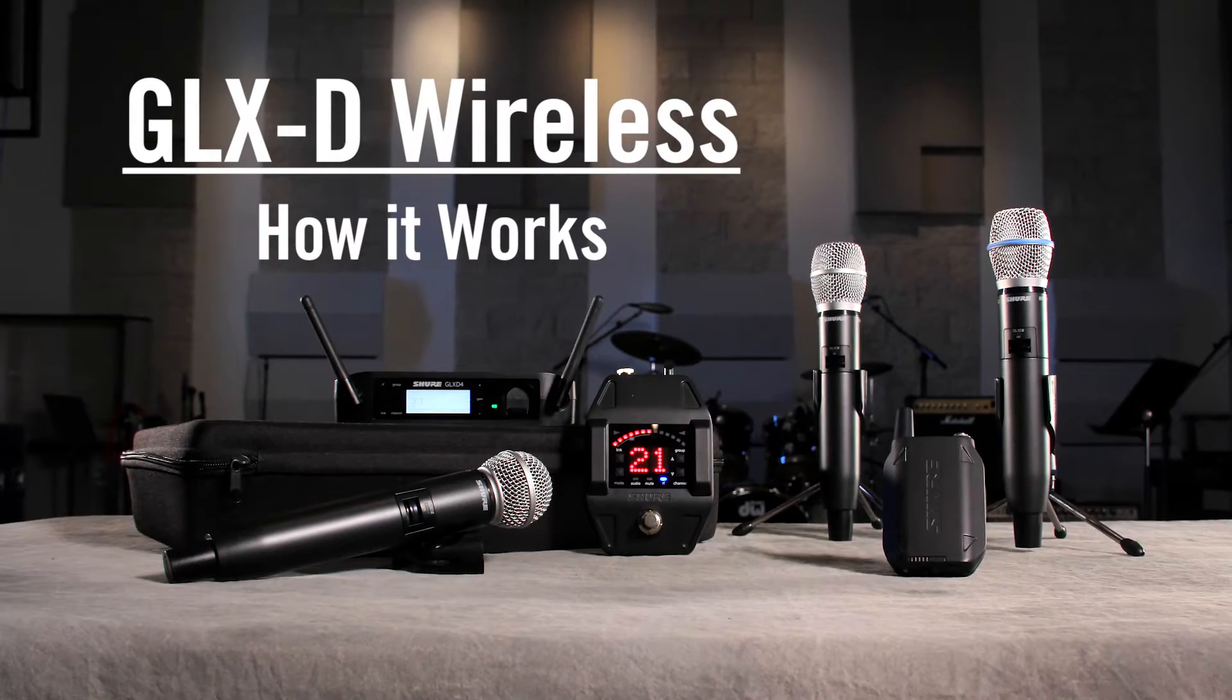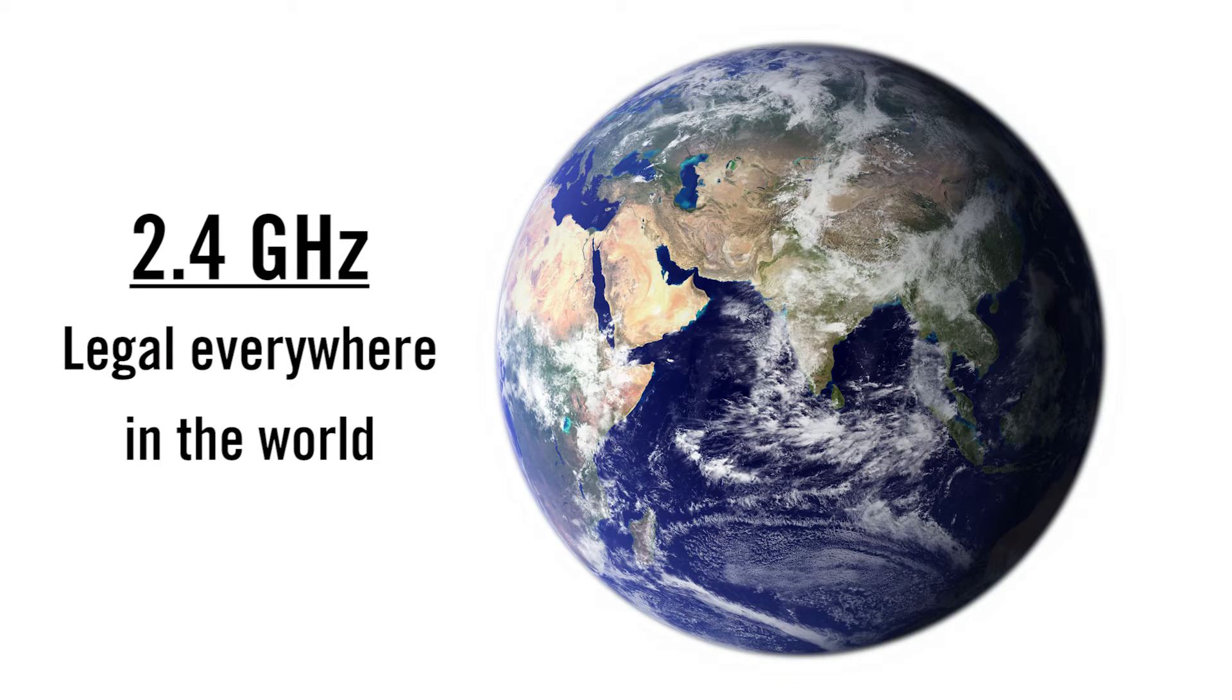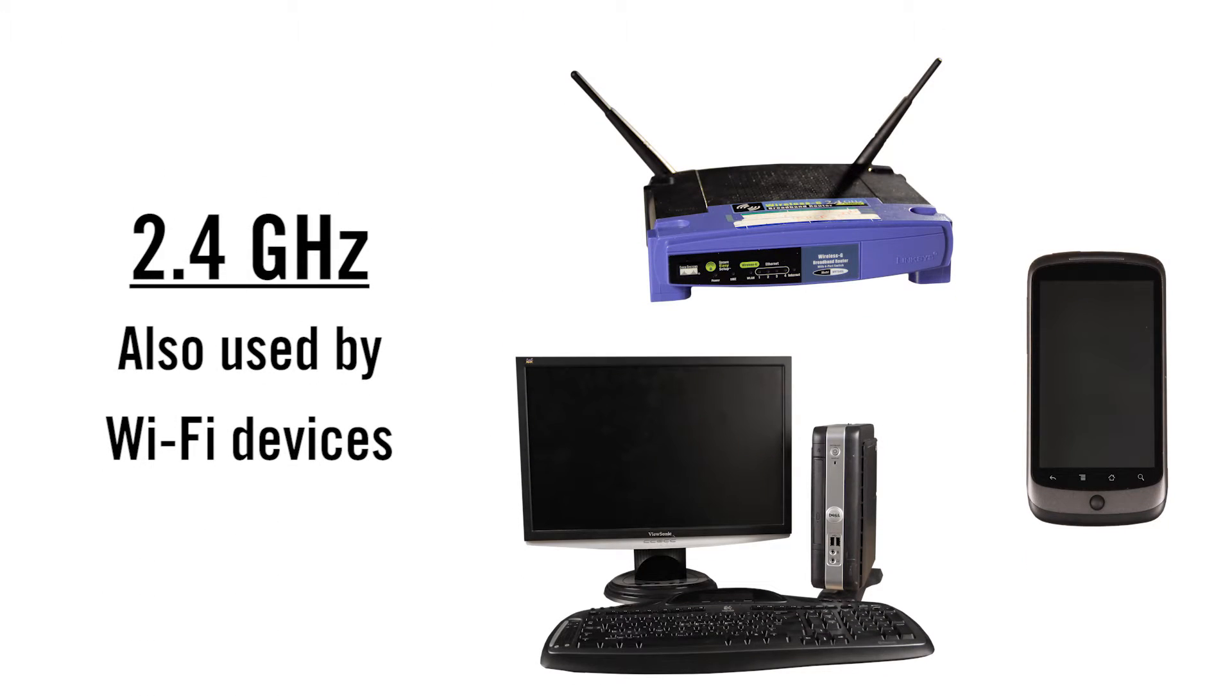The Shure GLXD digital wireless system operates on the 2.4 GHz frequency band, which is legal everywhere in the world. The 2.4 GHz band is also used by Wi-Fi devices, but that's okay.